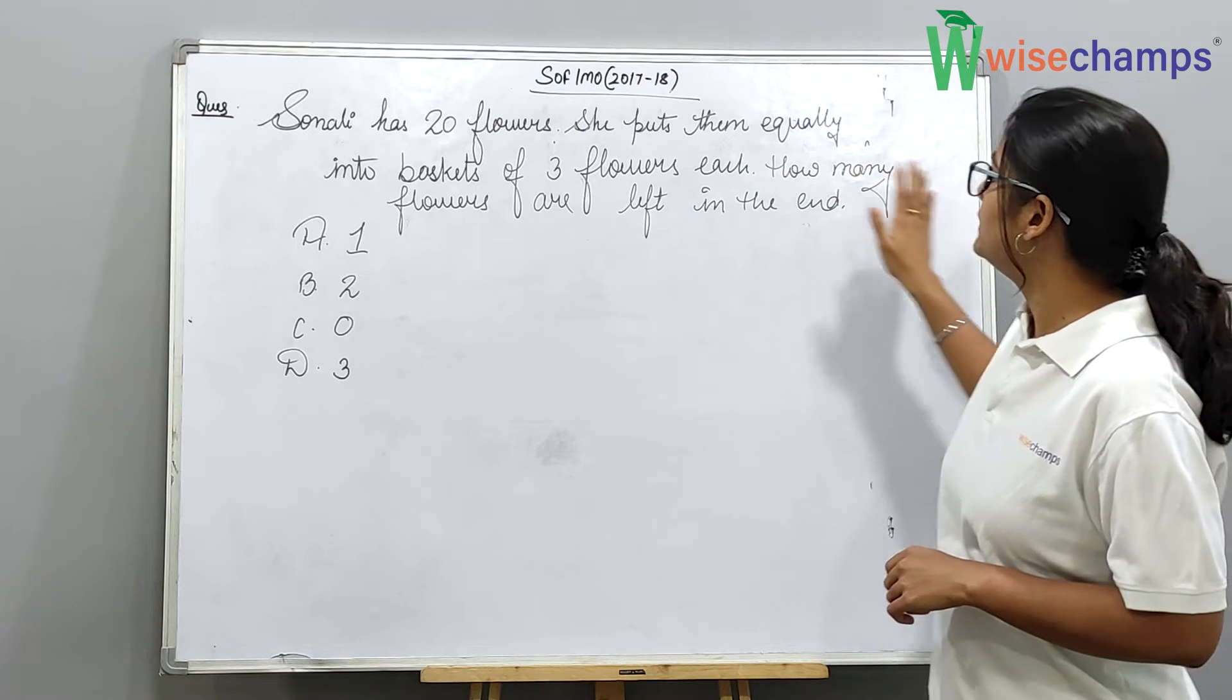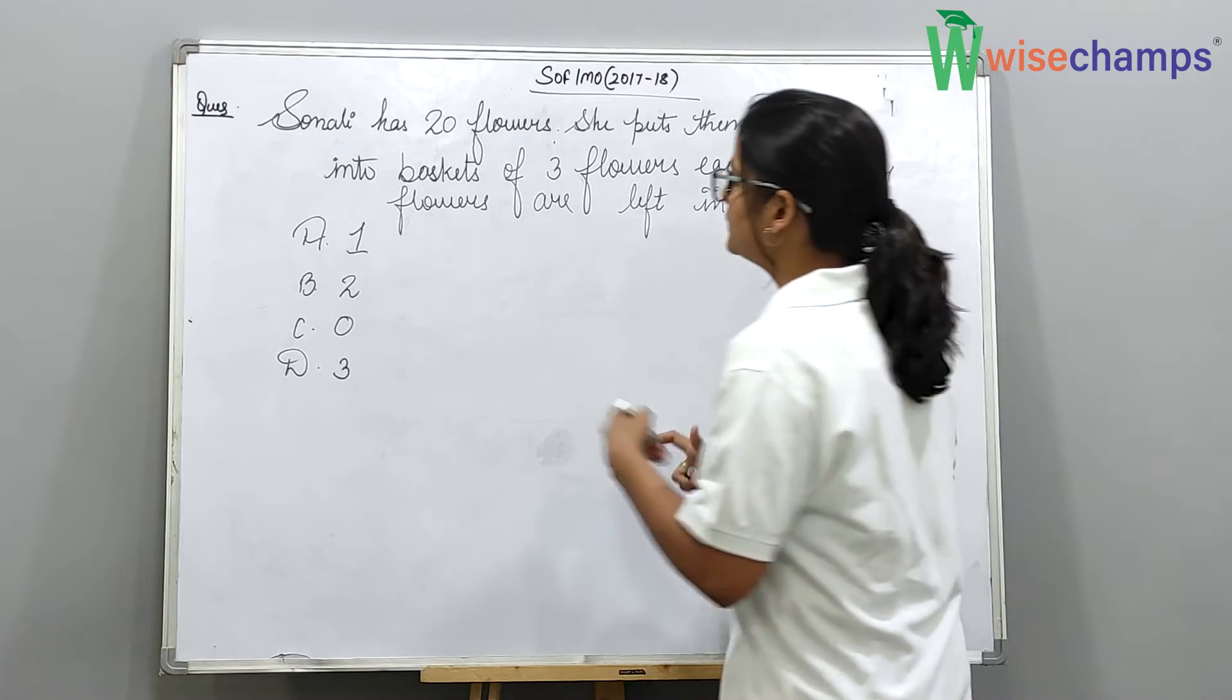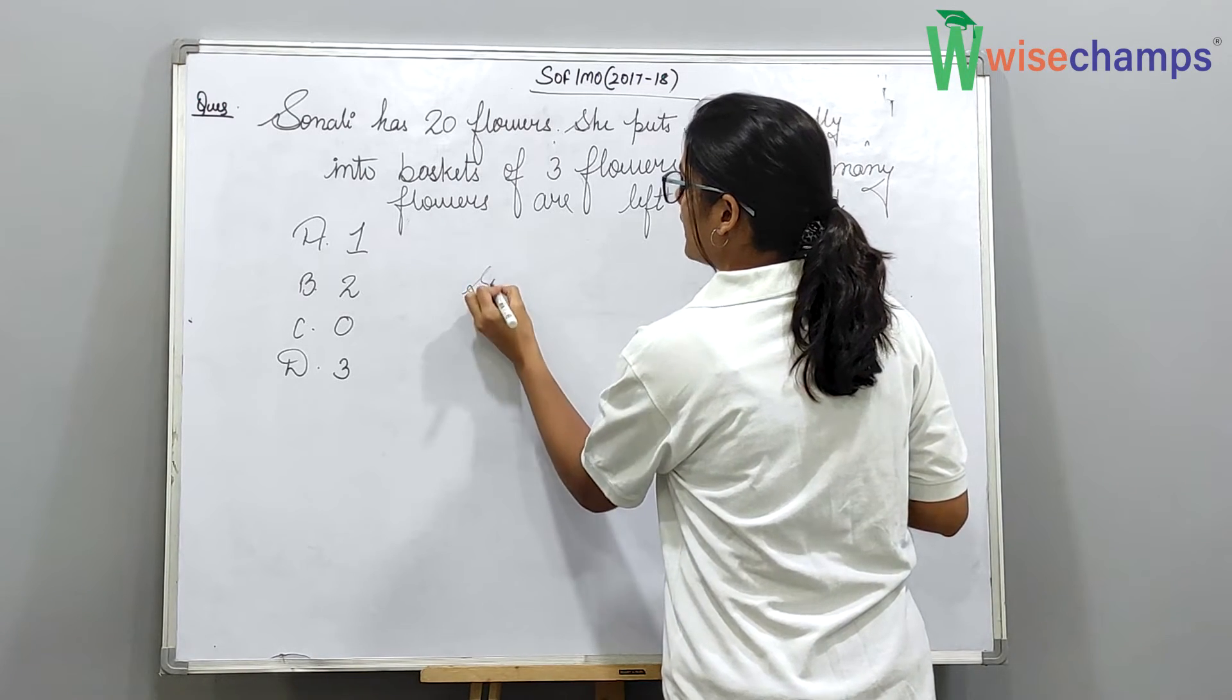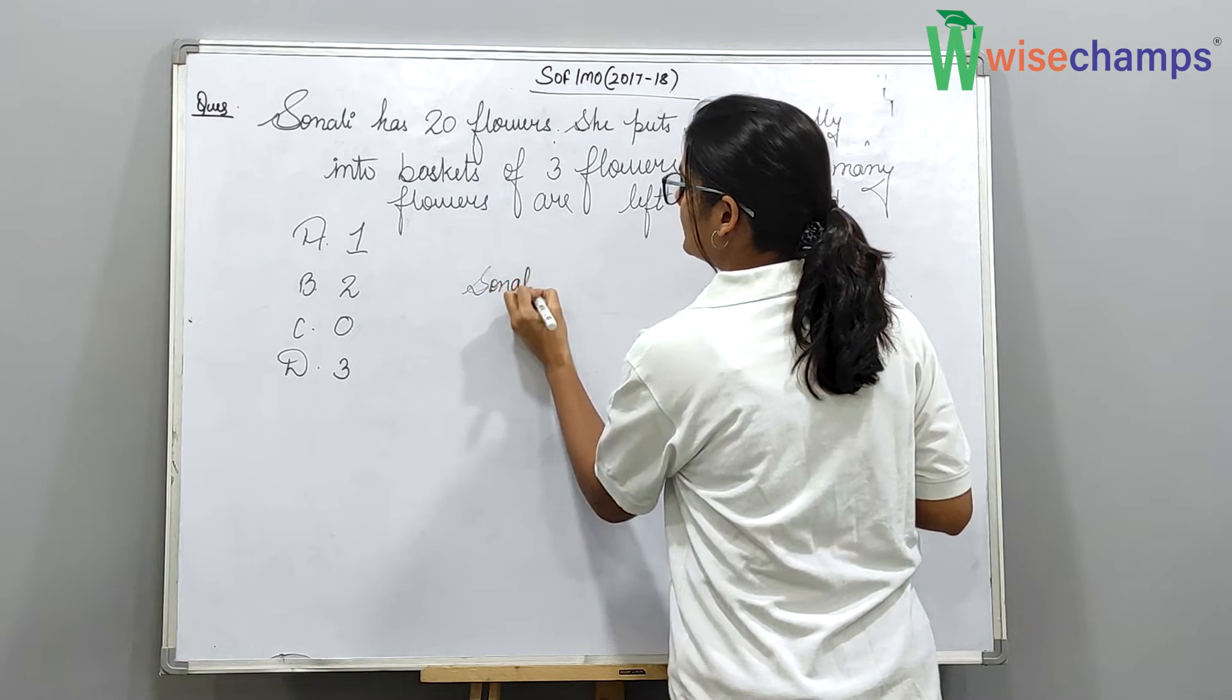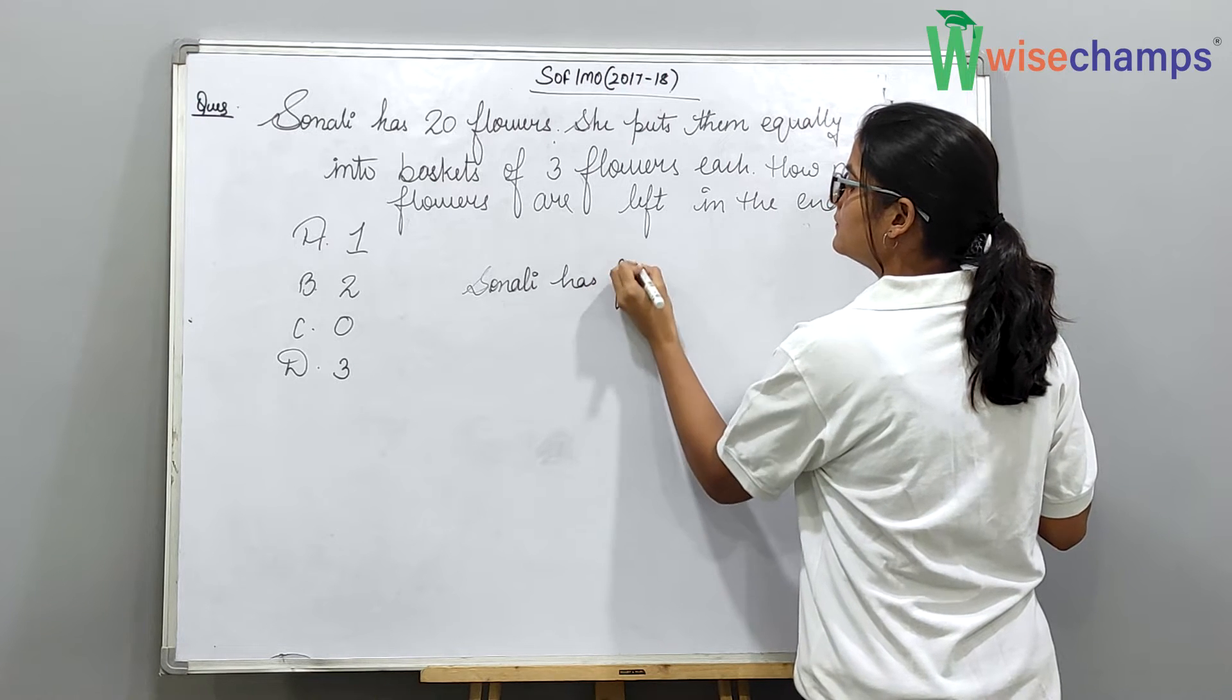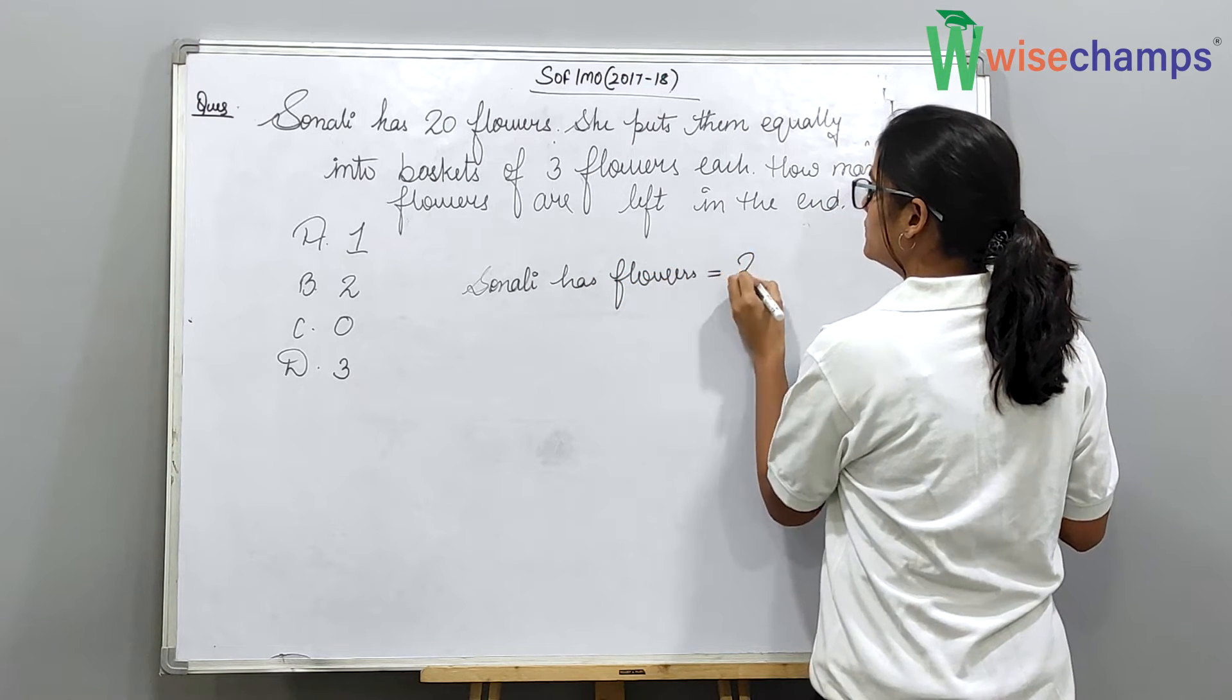How many flowers are left in the end? As we know that Sonali has flowers which is equal to 20.